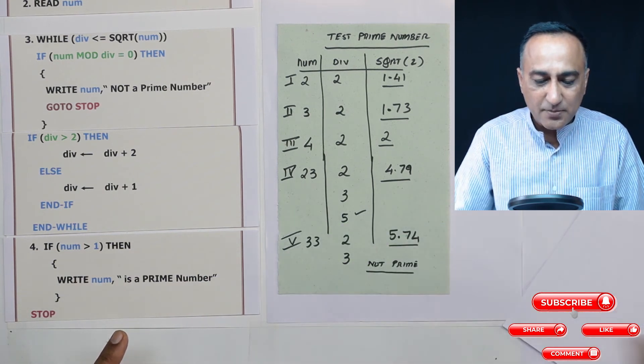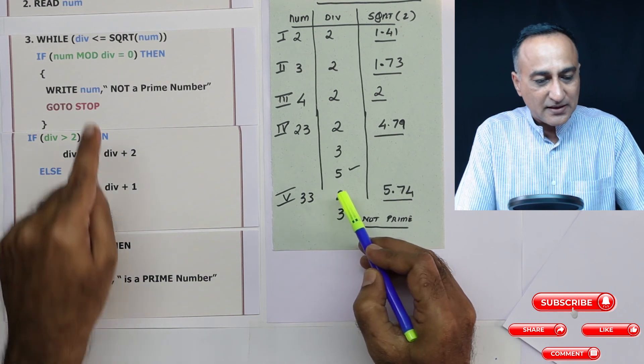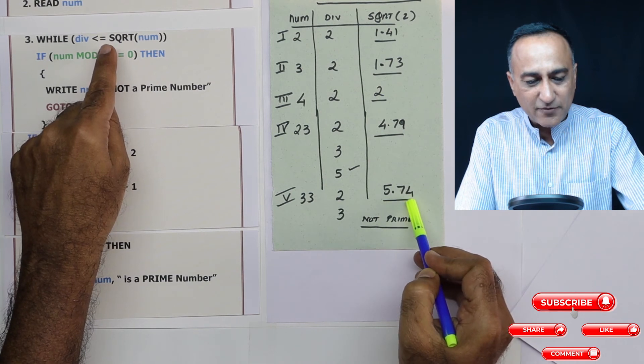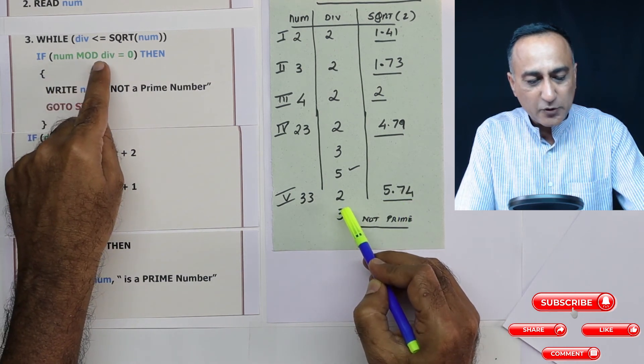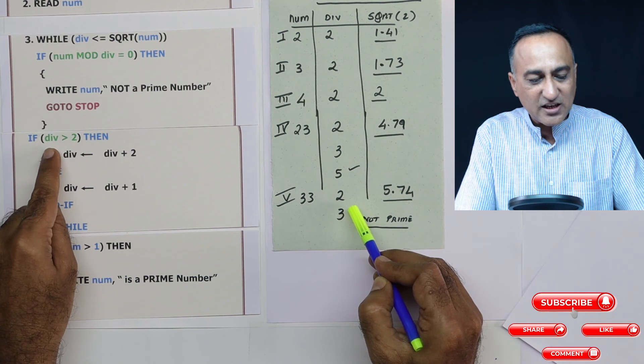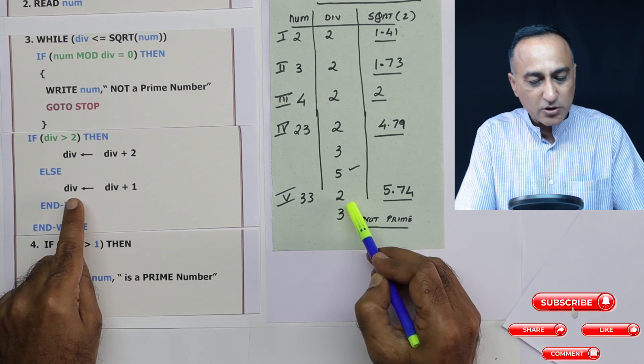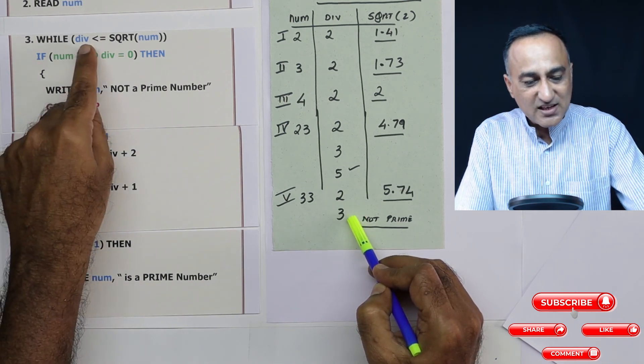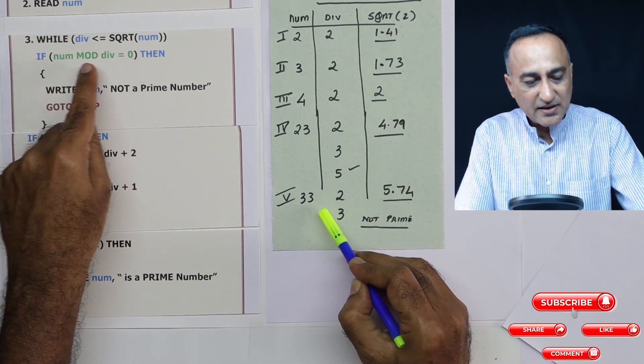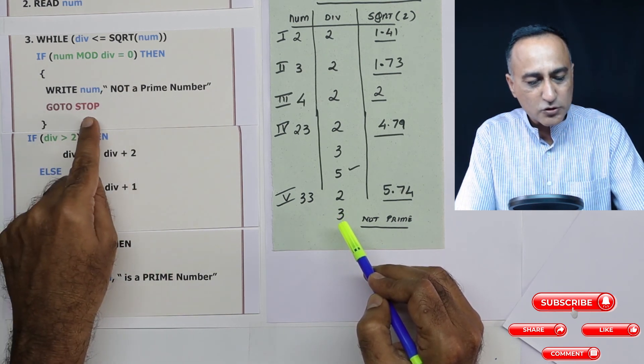I will give you one more example so that it becomes entirely clear. I have a number 33, divisor is 2. 2 is less than or equal to square root of 33 is 5.74. Now 33 divided by 2, the remainder is not 0, the remainder is 1. So I will come here, divisor is still 2. Since divisor is 2, 2 is not greater than 2, so divisor will become equal to 2 plus 1 becomes 3. Is 3 less than or equal to 5.74? Absolutely. Now 33 divided by 3, the remainder is going to be 0, so it will say 33 is not a prime number, go to stop, it will come here.